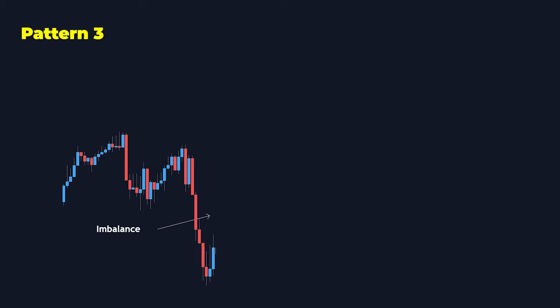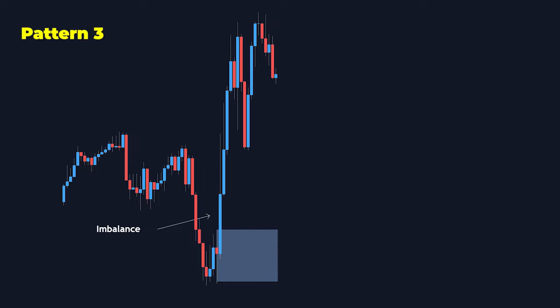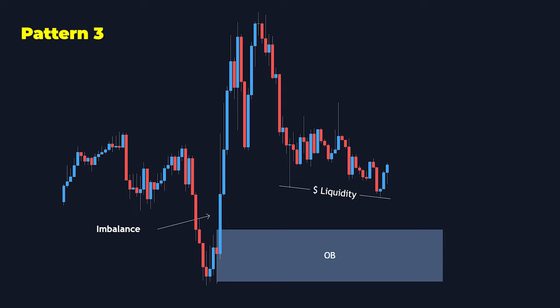This is the last pattern and it's probably my favorite. Price pushed up, we broke structure, we left some imbalance behind, and as price is coming back down to the order block, before the order block price is generating liquidity in the form of relative lows. What's very likely going to happen is price is going to take that liquidity — which is early buyers — tap into the order block, mitigate, and move up.